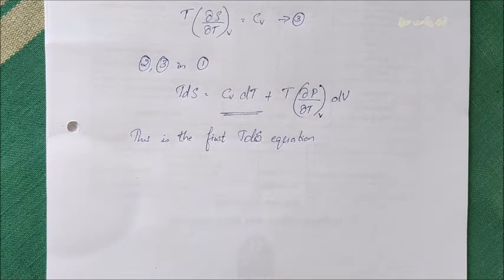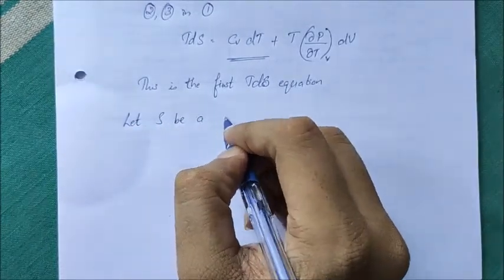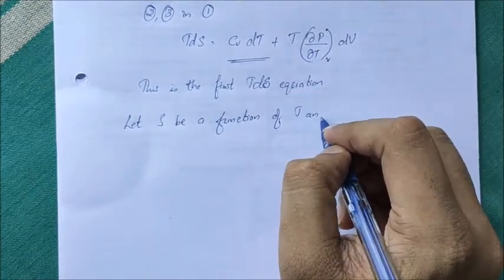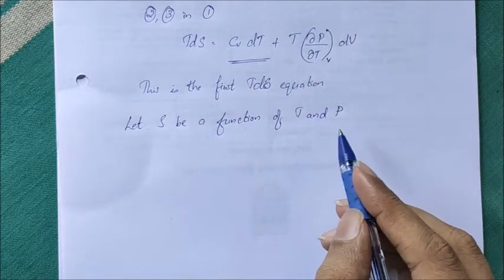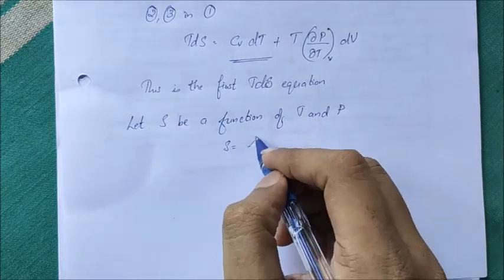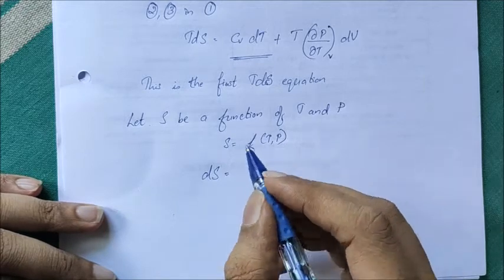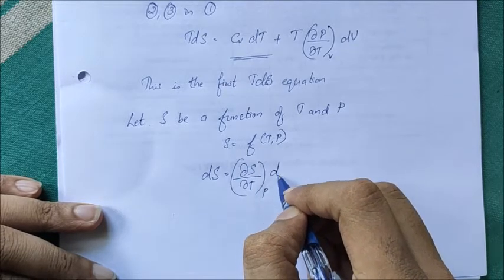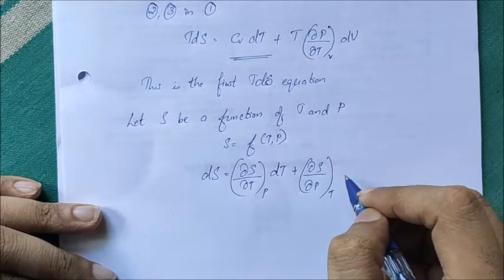Similarly, we have a second TDS equation and we are going to derive it. Now let S be a function of T and P. While deriving the first TDS equation we assumed S is a function of T and V; now we assume S is a function of T and P, so S equals F of T comma P. Therefore dS equals (∂S/∂T)_P dT plus (∂S/∂P)_T dP.